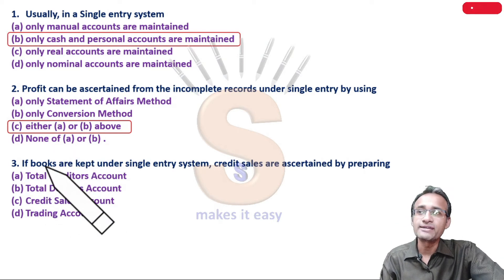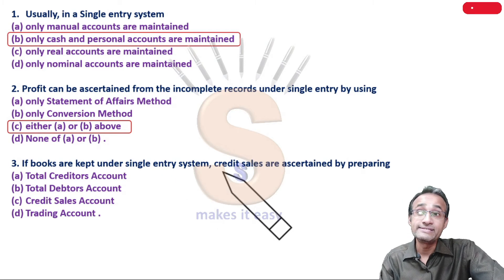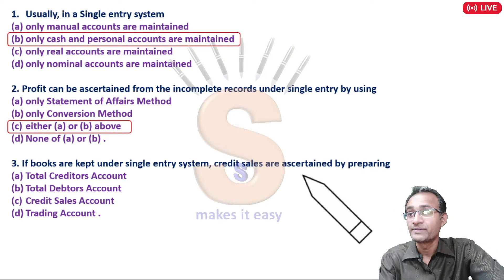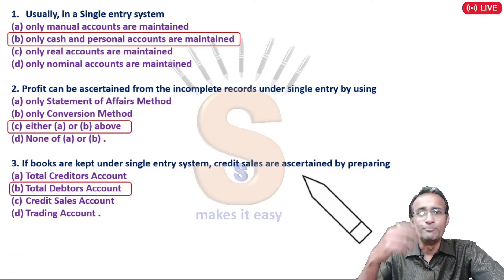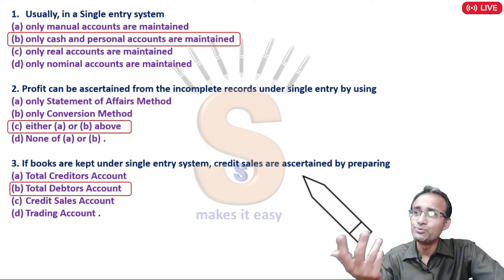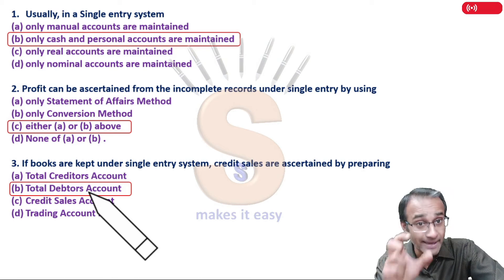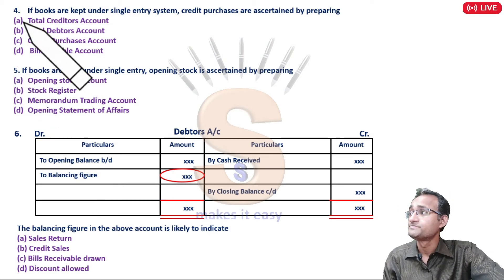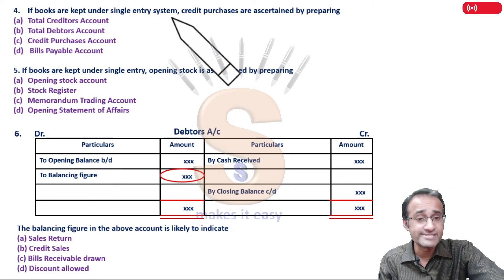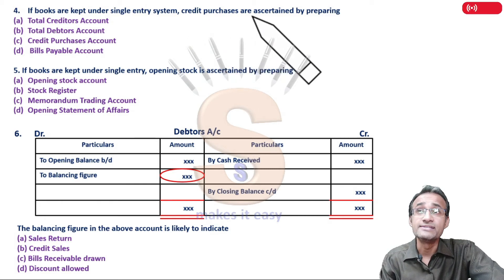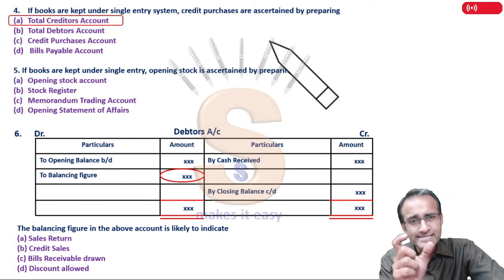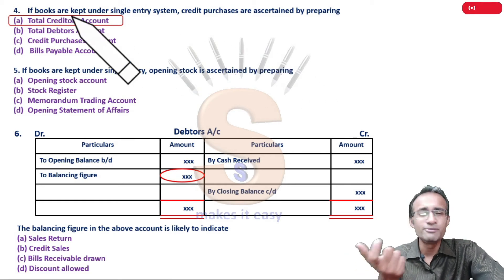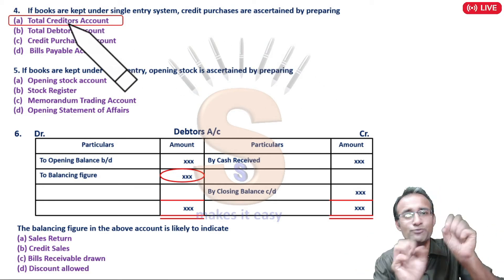Point three: If books are kept under Single Entry system, credit sales are ascertained by preparing a debtors account. Sales is connected to debtors - not creditors, bill receivable, or machinery. If you make a debtors account, normally it will give you a balancing figure of credit sales. Point four: Credit purchases are ascertained from creditors. Purchases is connected to creditors, so simply prepare a creditors account and the answer will come.